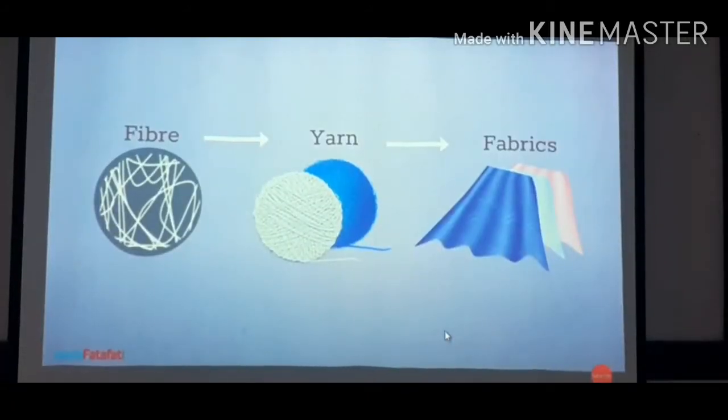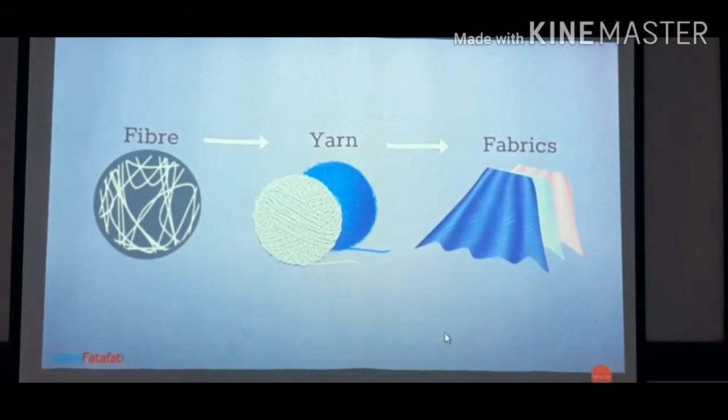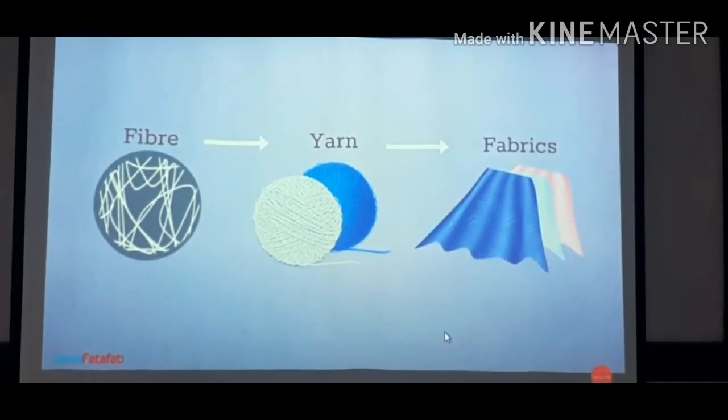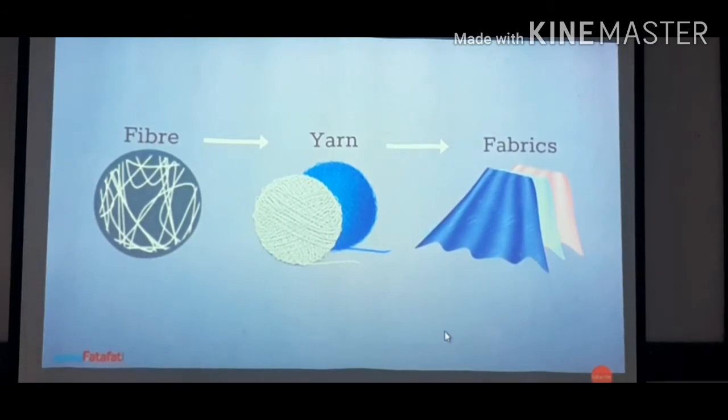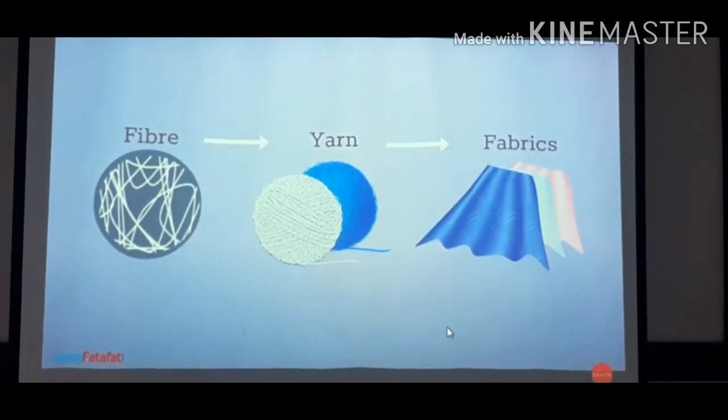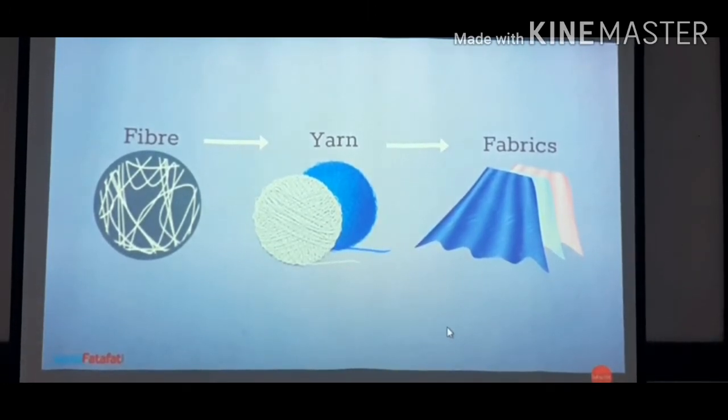You might have observed something similar when you tried to thread a needle. Many a time the end of the thread is separated into a few thin strands. This makes it difficult to pass the thread through the eye of the needle. The thin strands of thread that we see are made up of still thinner strands called fibers.